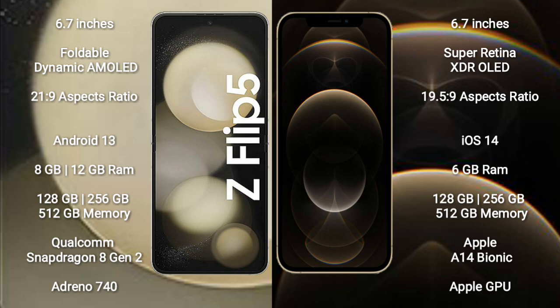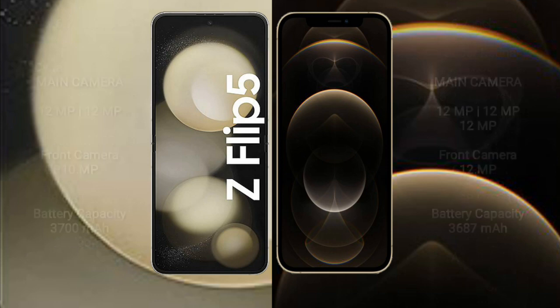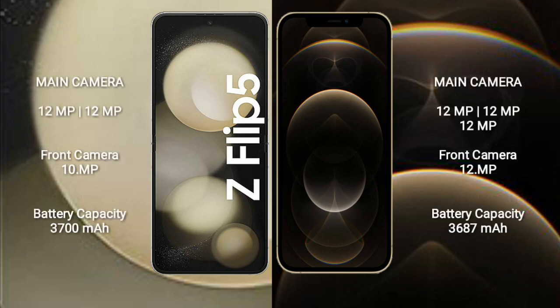iPhone 12 Pro Max comes with 6GB RAM and 128GB to 512GB internal storage, powered by the Apple A14 Bionic processor and Apple A1 Graphic GPU.